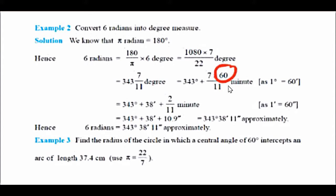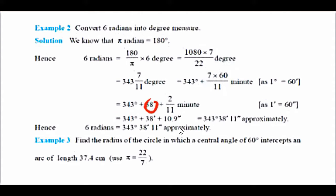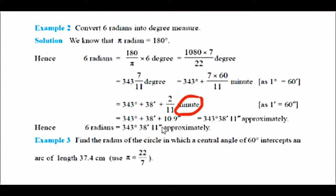Multiplying 7/11 by 60, we get 38 and 2/11 as the minutes. So 38 minutes, but 2/11 is again a residual. To convert this residual into seconds — since 1 minute has 60 seconds — we multiply 2/11 by 60 and get approximately 10.9 seconds. So the final answer is 343 degrees, 38 minutes, and approximately 11 seconds.